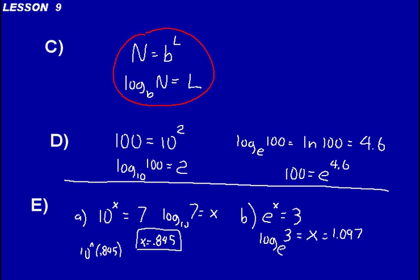Logarithm means exponent. For an argument N, which equals base B raised to the power of L, likewise, logarithm base B of N equals L. When John Napier invented logarithms, he spent 20 years making tables of logarithms for a bunch of different numbers. Fortunately, our calculators can now calculate logarithms for any number — base 10 and base e logarithms anyway. We can't do a base 3 or base 5 logarithm directly on our calculator, but base 10 and base e are the most common ones.